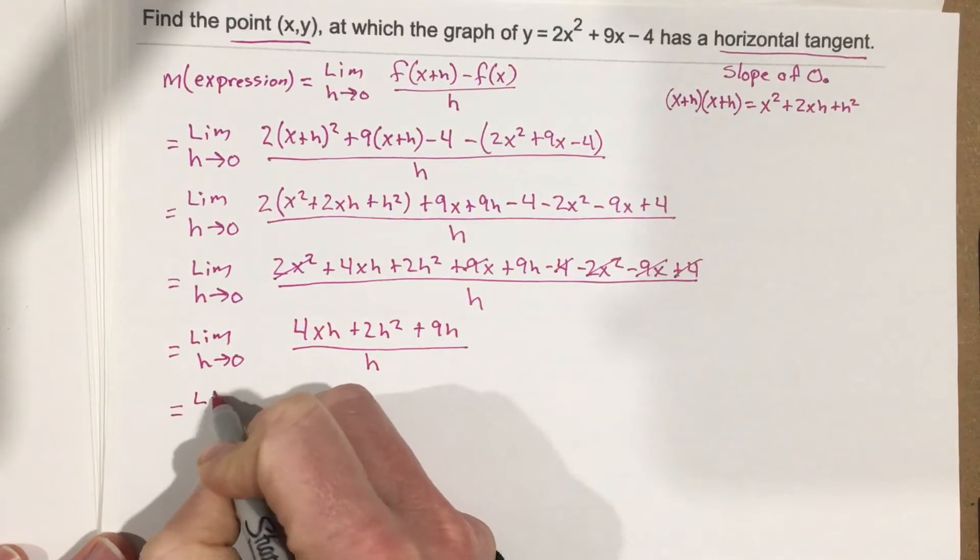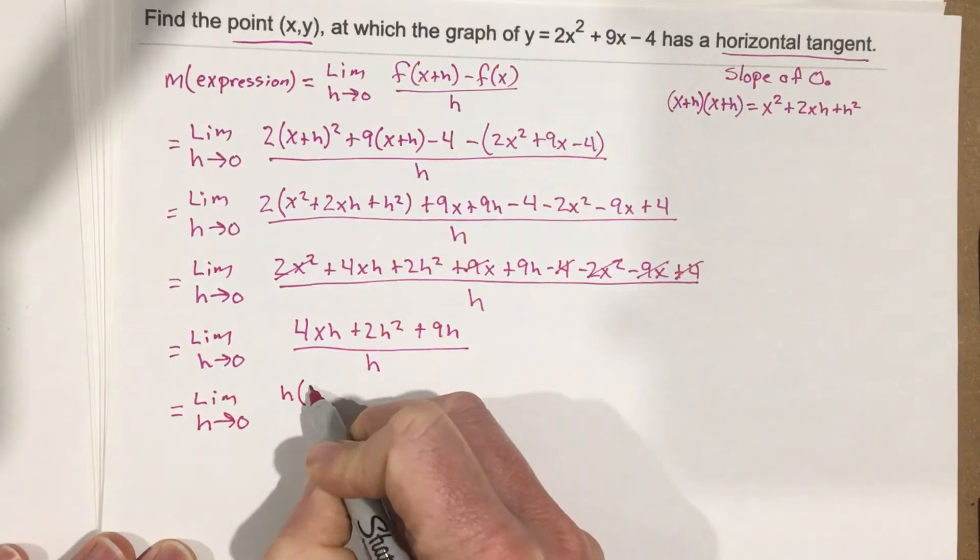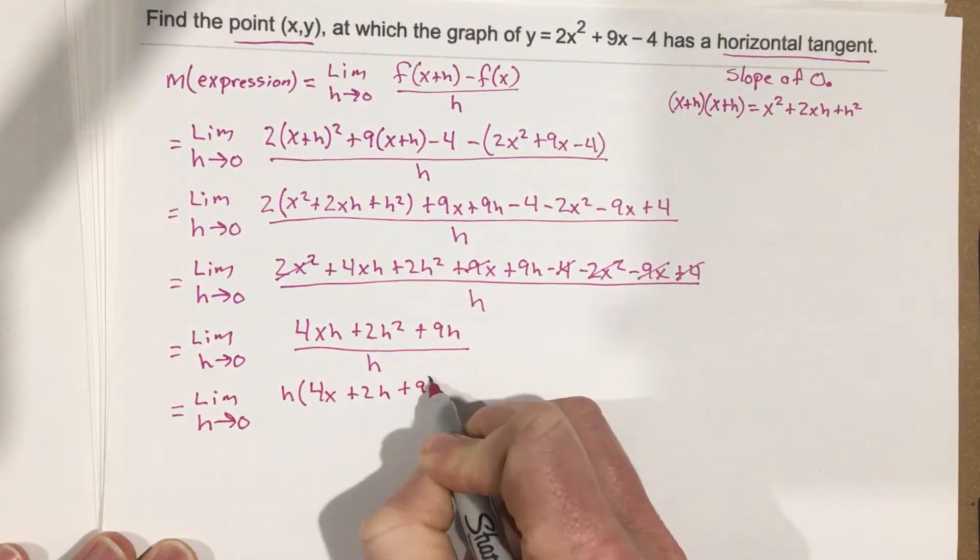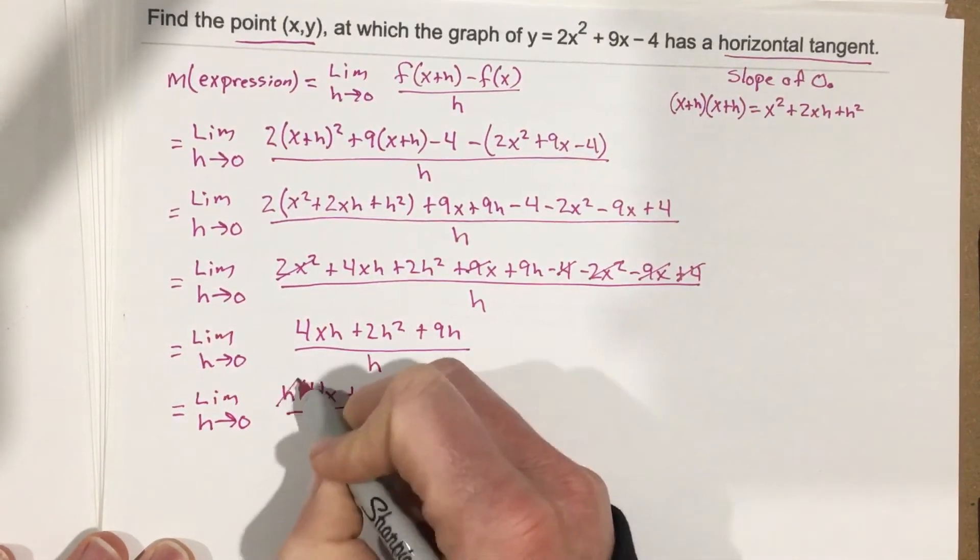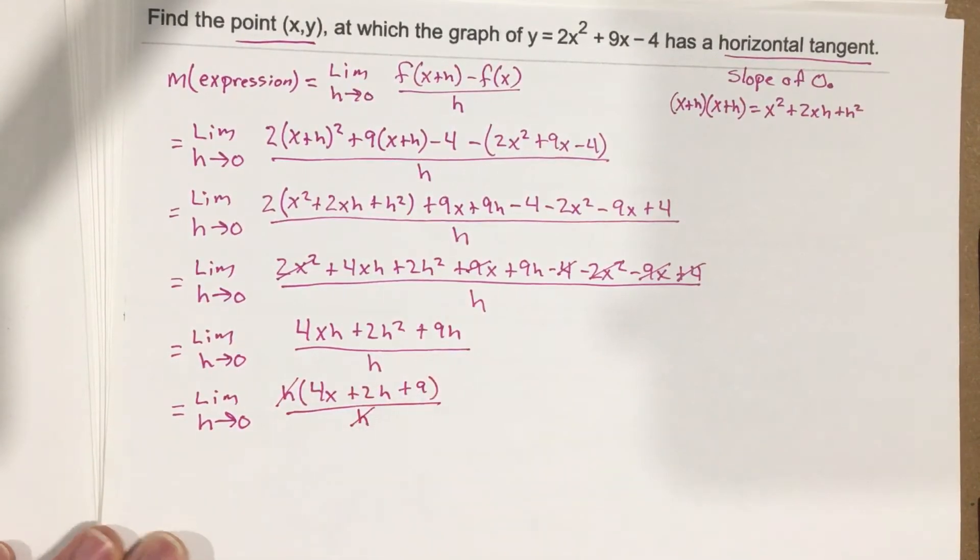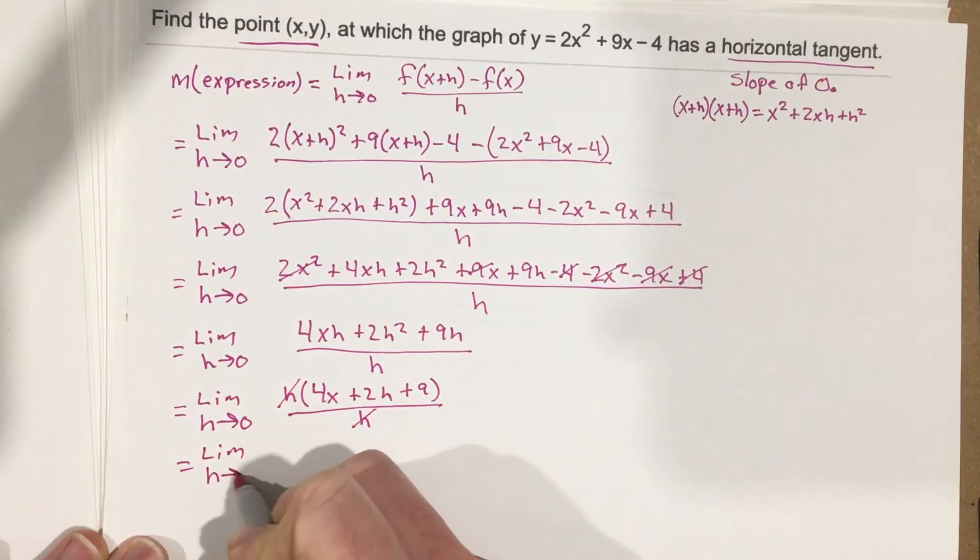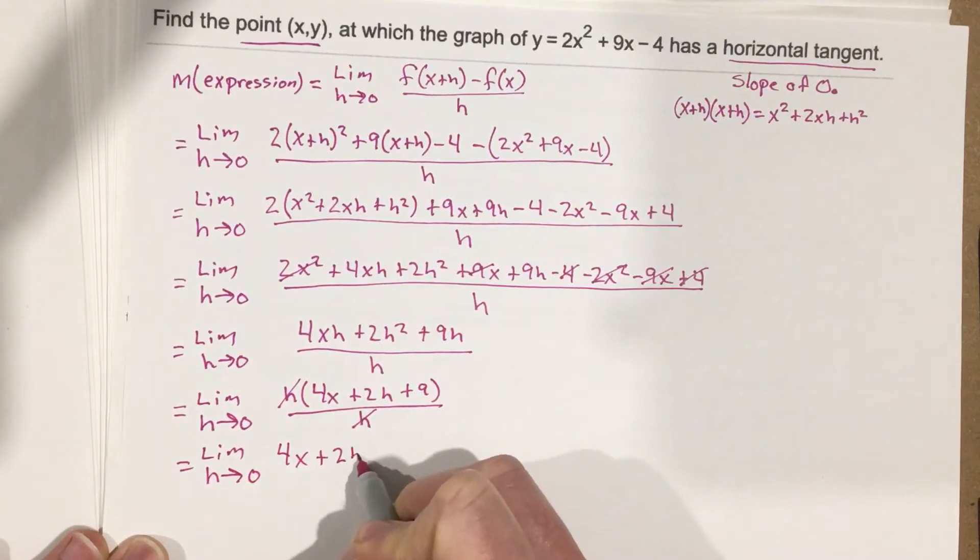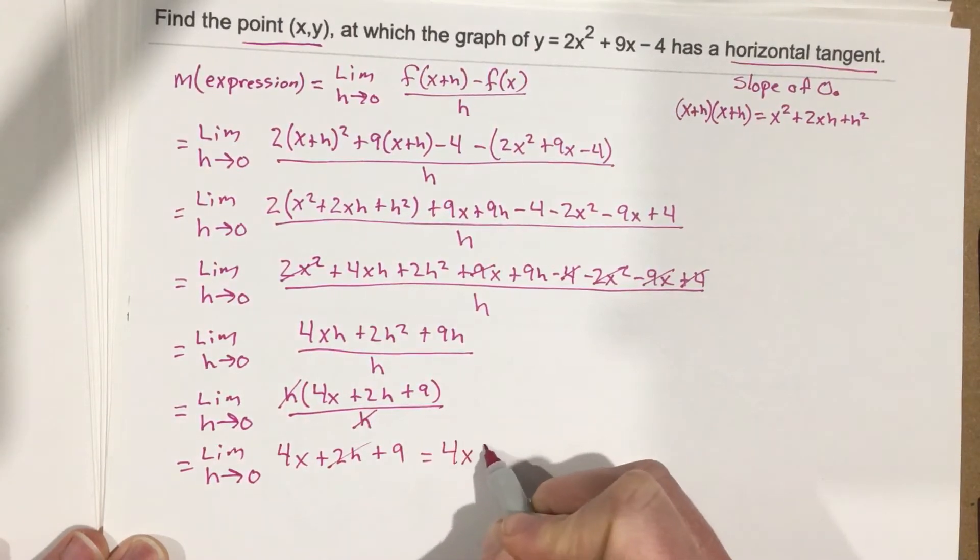We'll cancel the h's, and we have limit as h approaches 0 of 4x + 2h + 9. The 2h term is going to cancel, leaving us with 4x + 9.